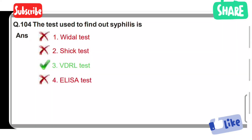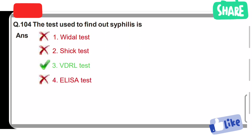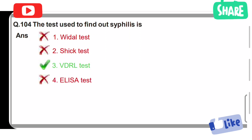The test used to find out syphilis: vital test, sick test, VDRL test, ELISA test. VDRL test is used to find out syphilis.